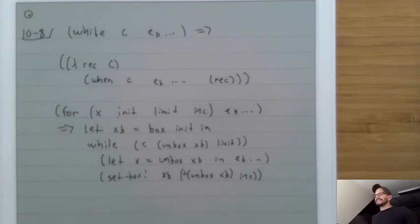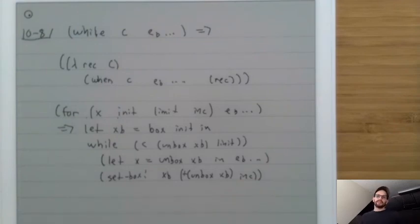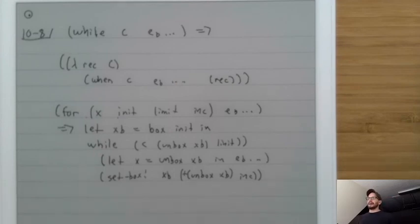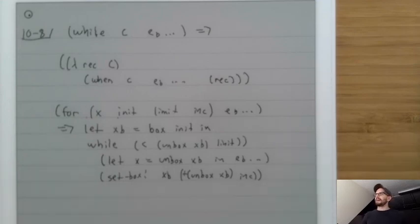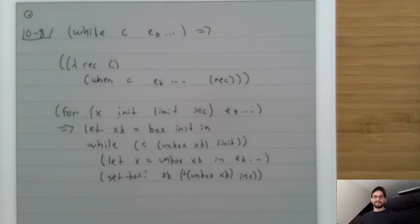For now we only have mutation of data structures — mutation of boxes. Next time we'll extend this to have variables like traditional languages such as C. See you next time.